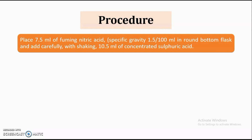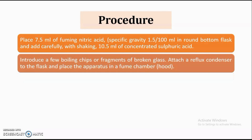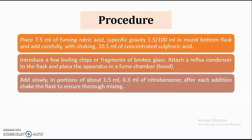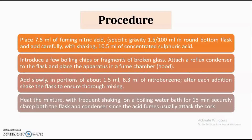First, place 7.5 ml of fuming nitric acid and add carefully 10.5 ml of concentrated sulphuric acid. I request you to write down the procedure so that when we are going to perform the practical virtually, you will get the idea about the different steps involved in the procedure. We have to introduce a few boiling chips, attach a reflux condenser, and place the apparatus in a fuming chamber. After that we have to carry out the addition of 6.3 ml of nitrobenzene, which should be added in portions of 1.5 ml.